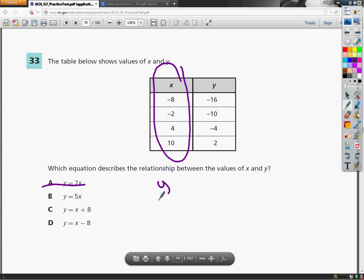For the second one I'm going to try y equals 5x. Instead of 5x I'm going to put 5 parentheses. I'm going to plug in negative 8 just like for x. 5 times negative 8 is negative 40, and it should be right there. It's not. So B is also not the correct answer.